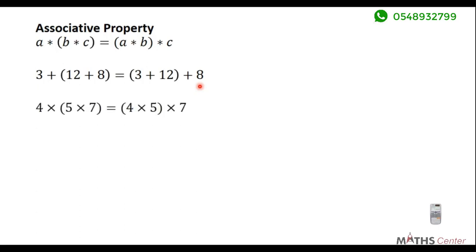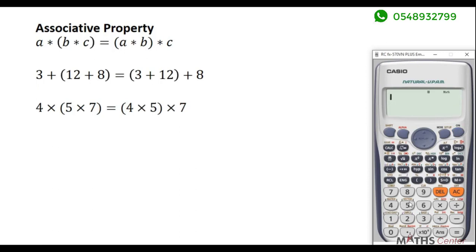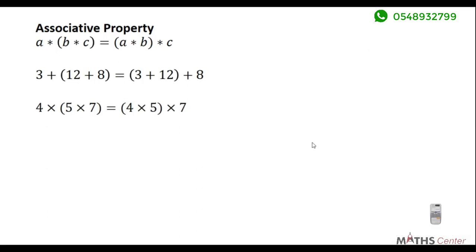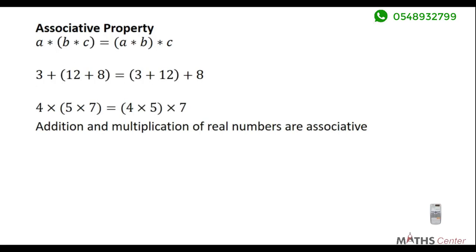For multiplication: 4 × (5 × 7) — compute 5 × 7 = 35, then 4 × 35 = 140. And (4 × 5) × 7 = 20 × 7 = 140. Both sides are equal, so multiplication is also associative. Addition and multiplication of real numbers are associative.